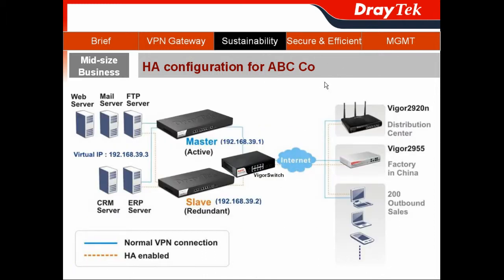Using the ABC company's story as an example — they have two Vigor3900s. One acts as the master device and uses the virtual IP 192.168.39.3. When it goes down, the backup Vigor3900 will take over the virtual IP and provide the loading service.